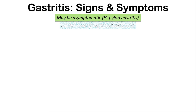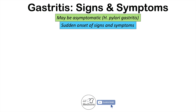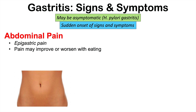But if a patient does experience symptoms, there is often a sudden onset — suddenly they'll have multiple symptoms. One of those symptoms is going to be abdominal pain, more specifically epigastric pain. Epigastric pain is located above the belly button, right in the center — that is where the epigastric area is and where a patient will often have some pain. That pain may improve or worsen with eating.